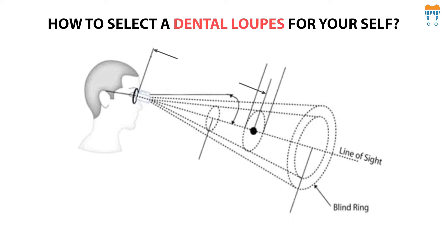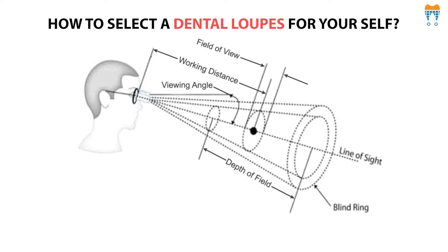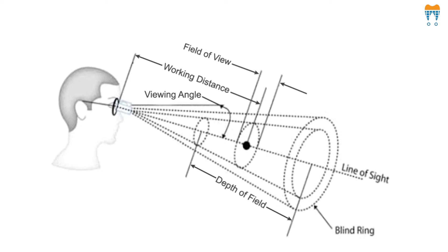Number three — how to select a dental loop for yourself. There are four important points to remember: number one, working distance; number two, depth of field; number three, field of view; and number four, distance from the lens. As you can see in the picture, these are the four key parameters to consider when selecting your dental loop.